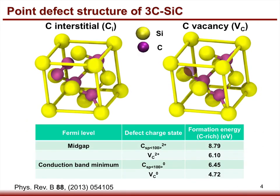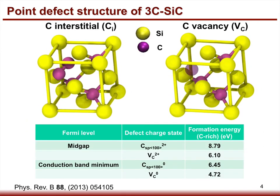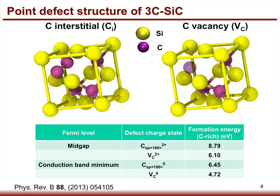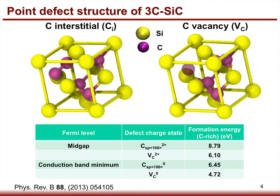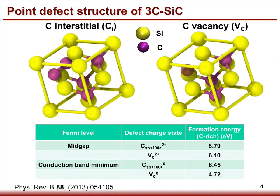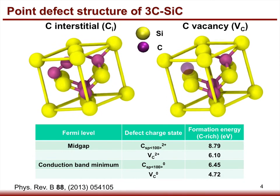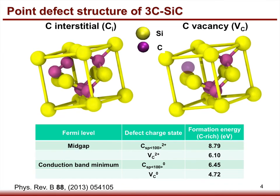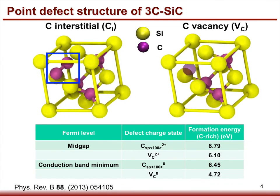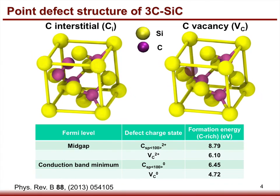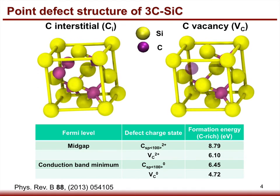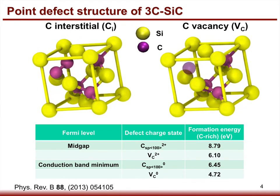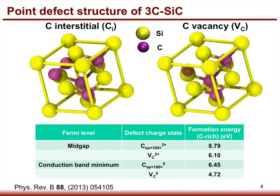Under irradiation, three types of defects are formed on each sublattice in Silicon Carbide, including interstitials, vacancies, and antisites. Here we show the example of a carbon interstitial. The most stable configuration has a carbon-carbon dumbbell structure, denoted as carbon split-100, meaning a carbon split interstitial along the 100 direction.